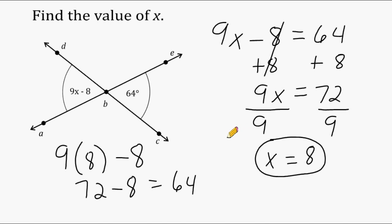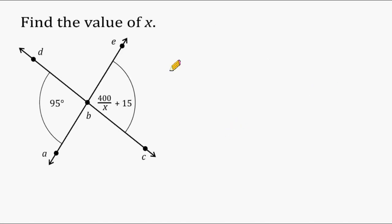All right, let's try another example. In this example, we still have to find the value of x. And x is located over here on this side of our two intersecting lines. We have the expression 400 divided by x plus 15. And that is going to be equal to 95, so let's set that up as an equation.